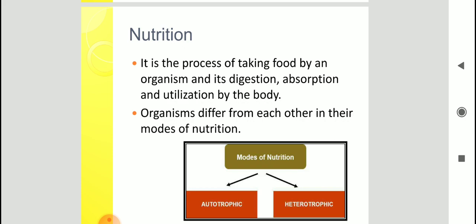Now, organisms differ from each other in their modes of nutrition. Some organisms can prepare their own food while others depend on plants or animals for food. So on the basis of mode of nutrition, living organisms are of two types, autotrophic and heterotrophic.